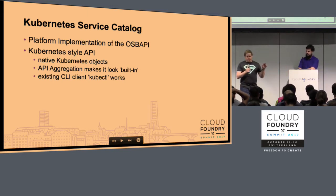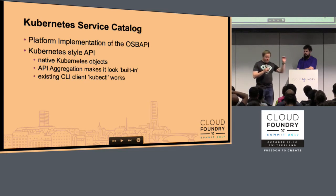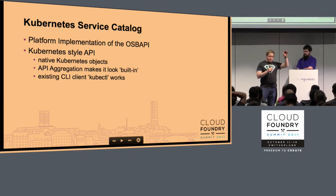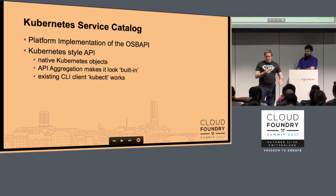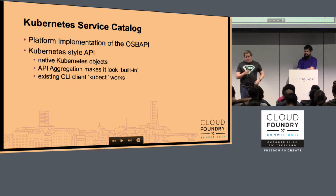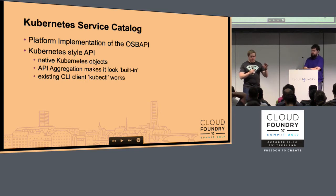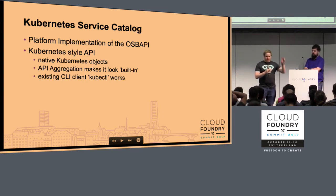As it is right now, there are two well-known platforms. One is obviously the Cloud Foundry cloud controller implementation, and the Kubernetes platform is the other one. I've heard of other platforms being created just at this conference. What I've been working on for the last year or so is the service catalog in Kubernetes, which is the platform side of the service broker in Kubernetes — a native Kubernetes style API. Using Kubernetes objects, you can use kubectl as if this was a built-in thing like pods or deployments. Once it's installed, API aggregation means you can talk to the same kube server.